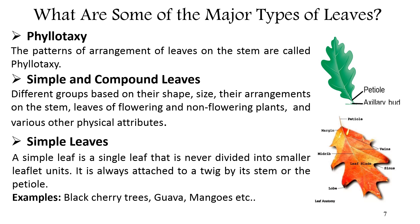There are two broad categories of leaves: simple and compound leaves, which are further classified into different groups based on their shape, size, arrangement on the stem, and various other physical attributes. A simple leaf is a single leaf that is never divided into smaller leaflet units — there is no subdivision of the leaf blade. It is always attached to a twig by a stem or petiole.